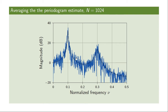If we look at the periodogram estimate, it's going to be fairly bad at any particular frequency, but if we look over a range of frequencies, we see that sometimes it's above and sometimes it's below. So by averaging over frequencies instead, we could also obtain a more reliable estimate of the true power spectral density.